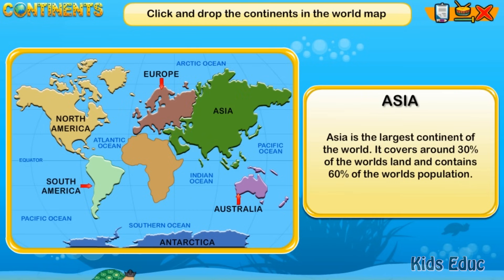Asia is the largest continent of the world. It covers around 30% of the world's land and contains 60% of the world's population.